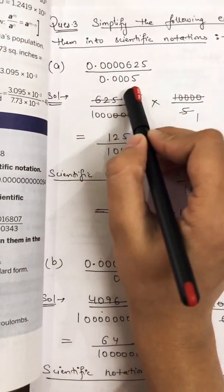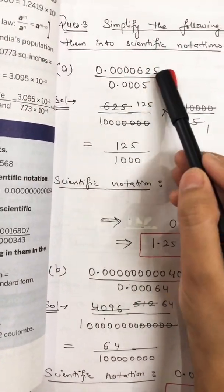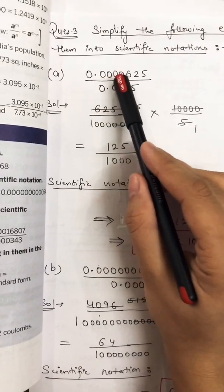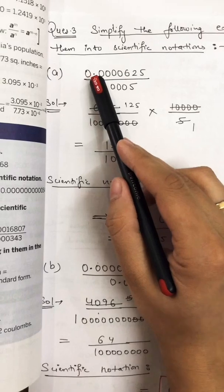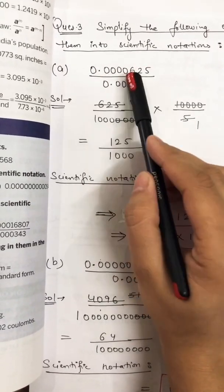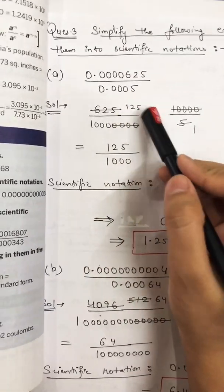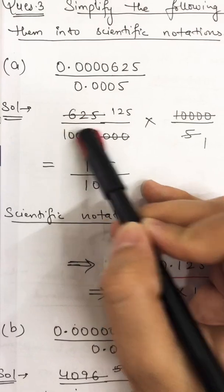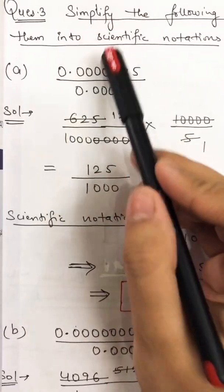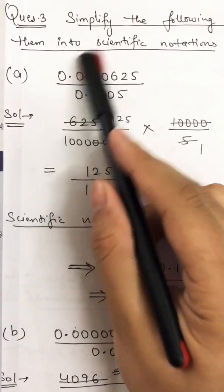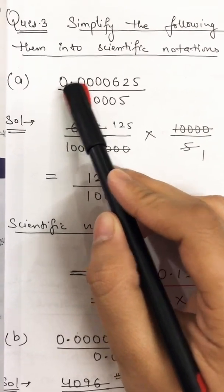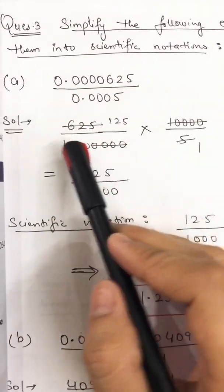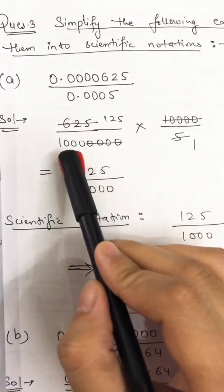Part number one — I'm going to write down the numerator in this form: 0.0000625. After the decimal these many digits are there. First, only write down the numerator, then go for the denominator. Write down 625 divided by — now, if I remove the decimal, how many zeros will come in the denominator? Count how many digits are after the decimal: one, two, three, four, five, six, seven digits.